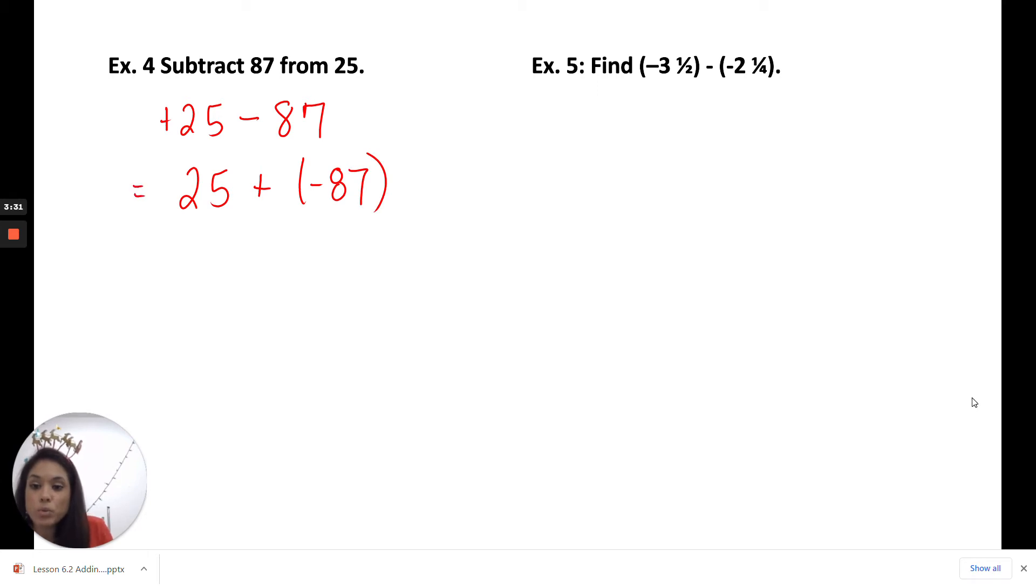We know from our previous rules we're going to find the absolute values of these numbers and subtract the smaller from the larger. The absolute value of negative 87 would be just 87. And then we're going to subtract the smaller value of 25 to get 62. Now, since these signs are different, we have a positive 25 here and a negative 87 here, we keep the value of the larger number. So the answer will be negative 62.